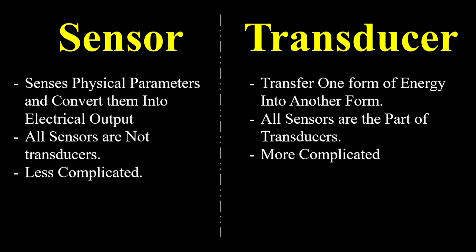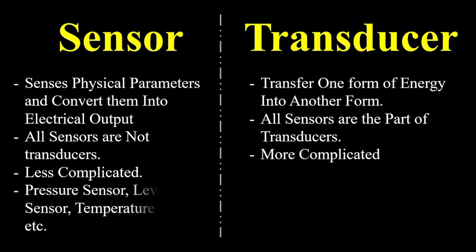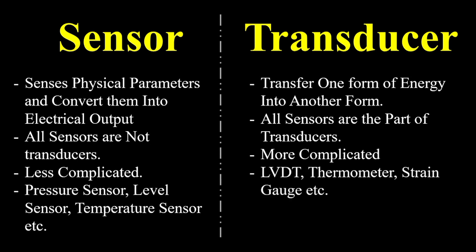Now let's see what are the common types of sensors. Commonly used industrial sensors include pressure sensors, level sensors, and temperature sensors. Apart from these, we have flow sensors, speed sensors, and many more. Common types of transducers include LVDT, thermometer, strain gauge, etc.